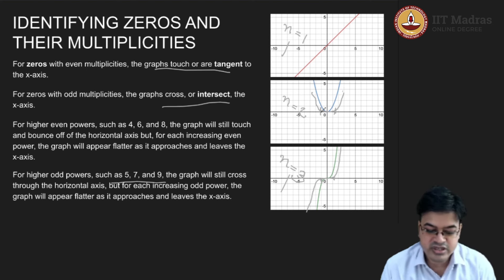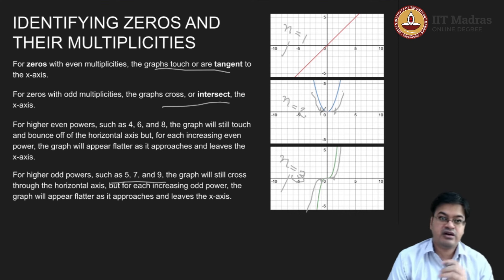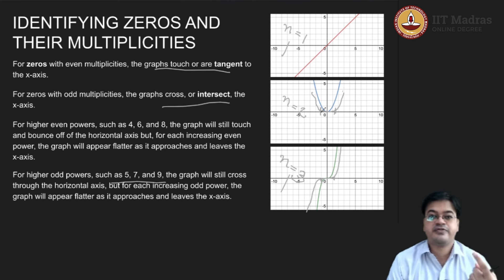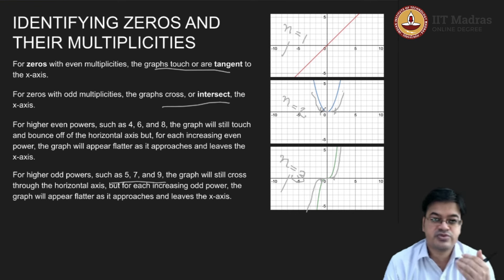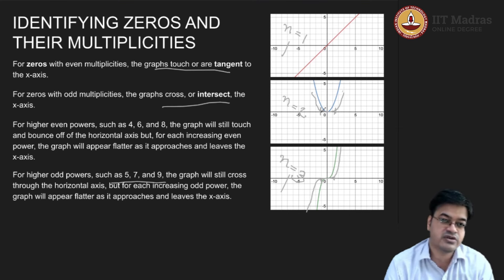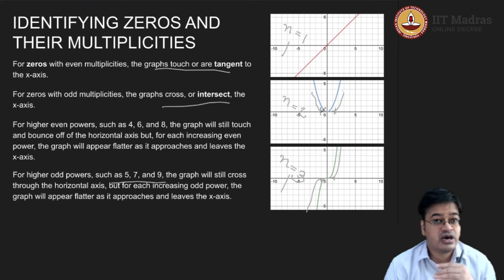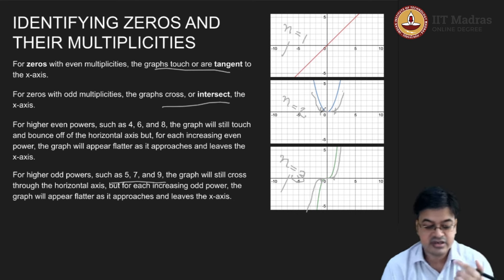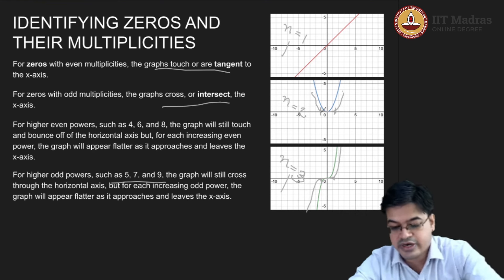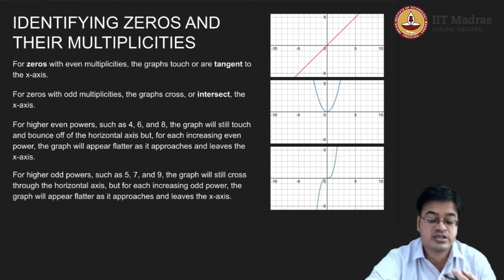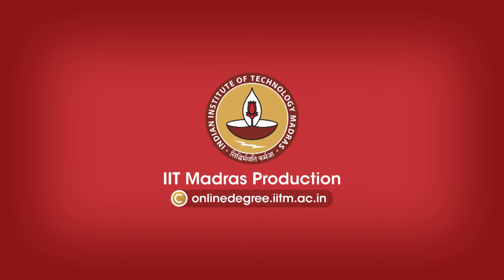So now we have added one more weapon in our arsenal: we will identify the multiplicities of the zeros. First, at step zero, we identified whether a given function is a polynomial function or not. Then we identified the x-intercepts, that is the zeros or roots of the function. After identifying the roots, we now know how many times each root is repeated — that is what we have identified here using graphical tools. This is quite powerful and you can use it to understand polynomial functions. When you solve problems on identifying polynomial functions, you will get a better hold of it.